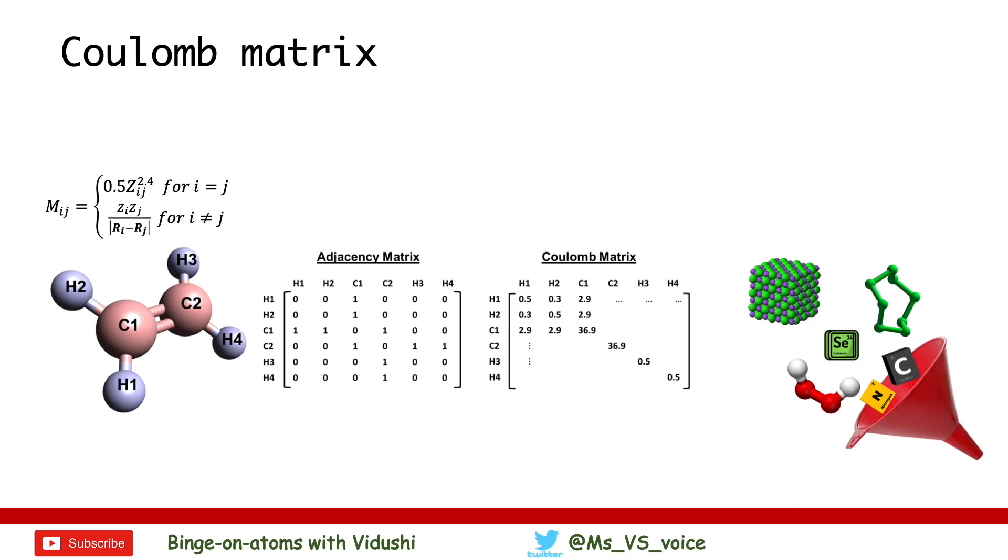Coulomb matrix combines both structural and charge information. It is similar to adjacency matrix and encodes the atomic species and interatomic distances of a finite system in a pairwise two-body matrix.